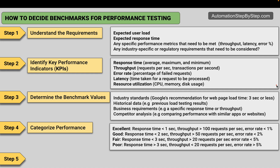You will be consolidating reports and calculating averages across all performance test results. You cannot share all the detailed sheets with all stakeholders. They need to know in very simple terms whether the performance was excellent, good, poor, or bad. It is also recommended that within your teams you have simple communication and categories — terminologies to say the performance was good or bad — and if someone asks for details, you can then share the complete result.